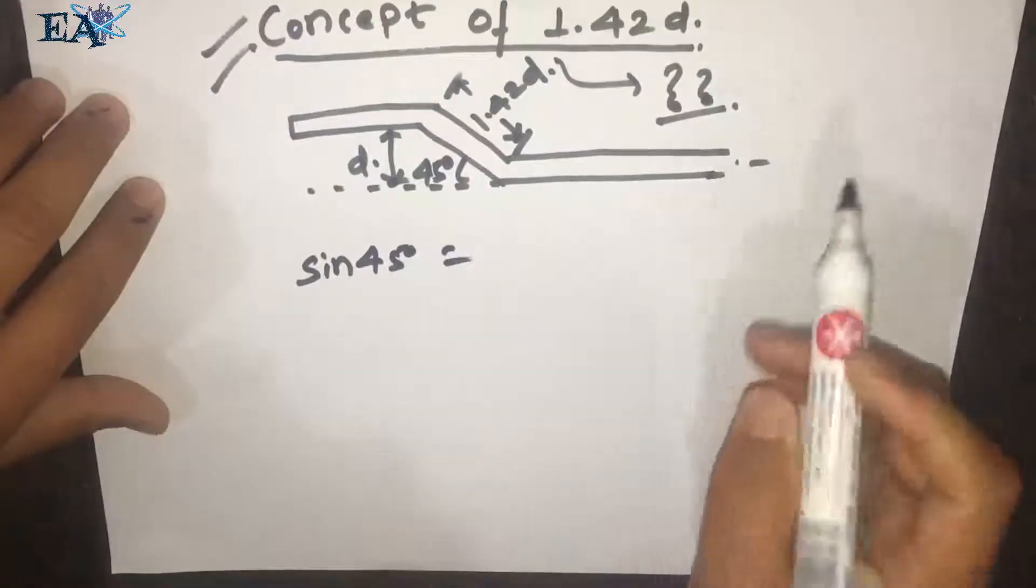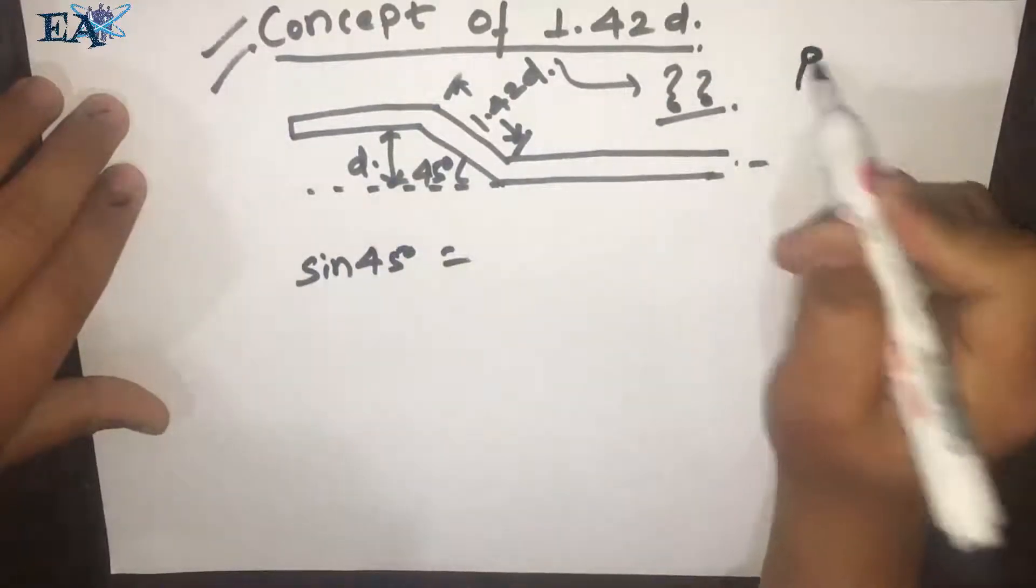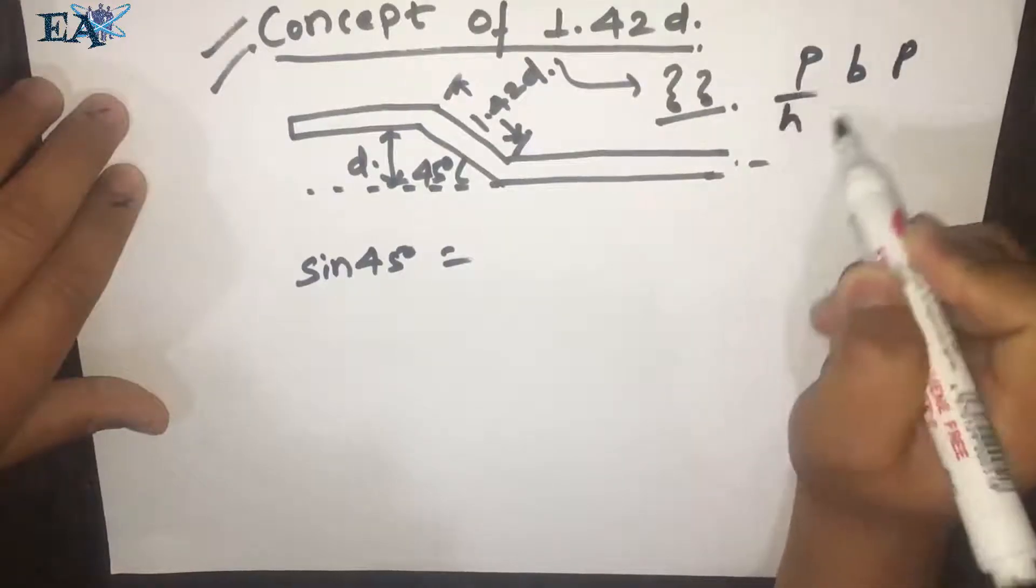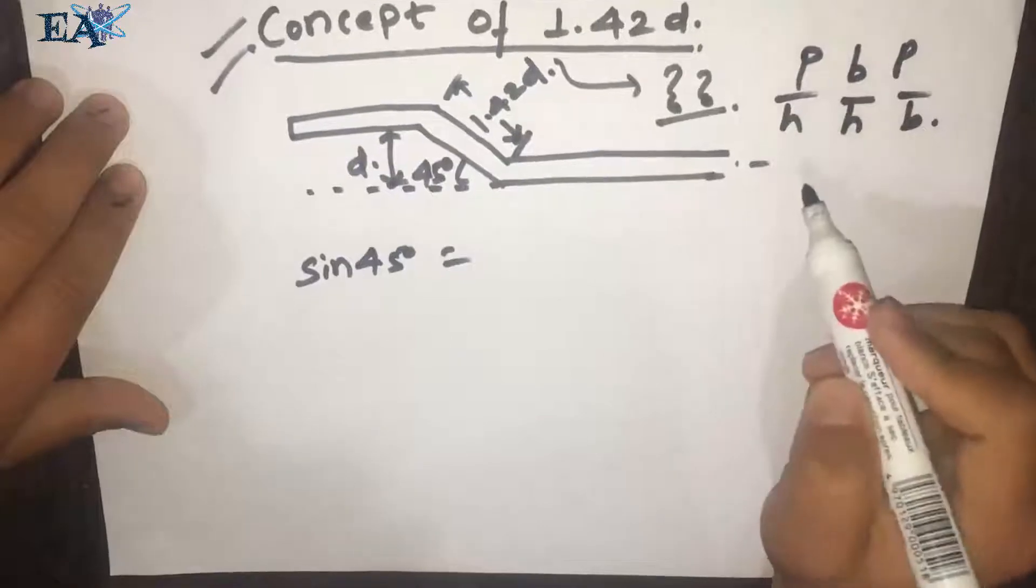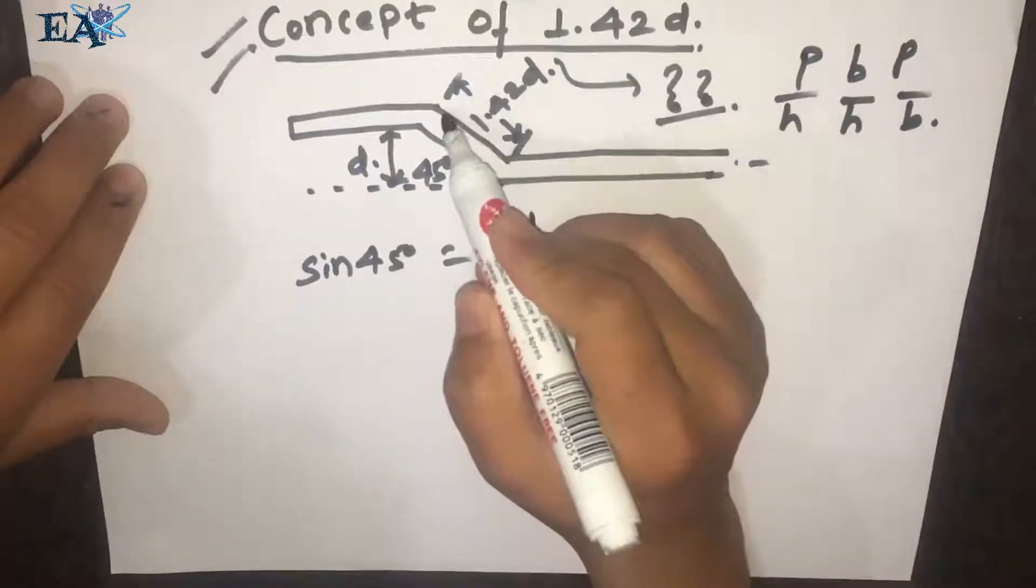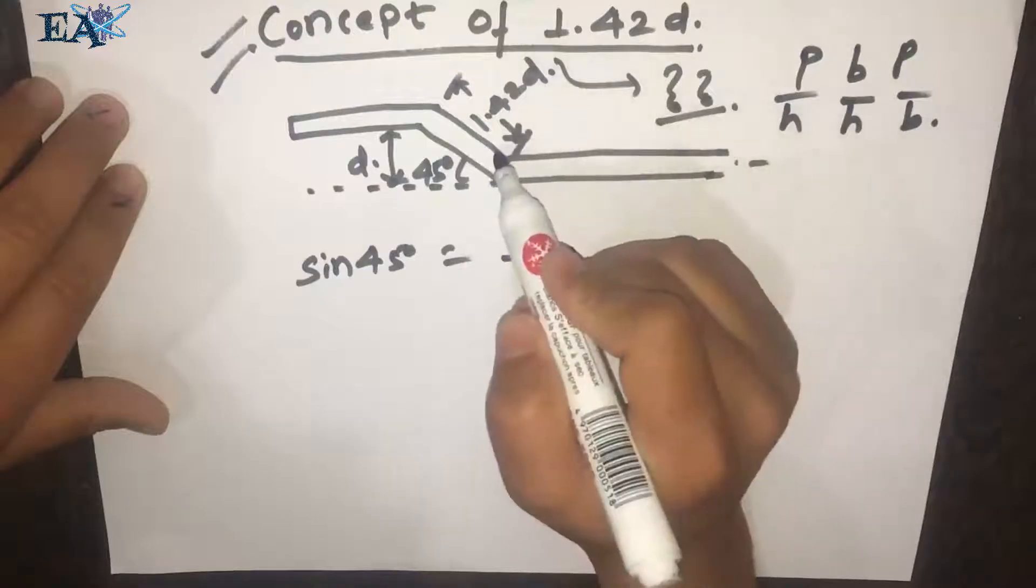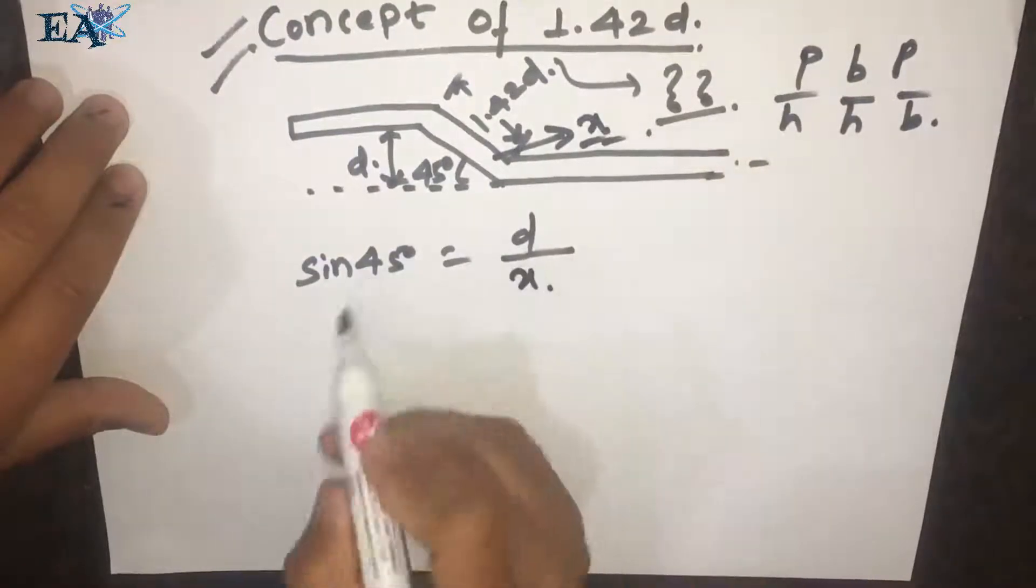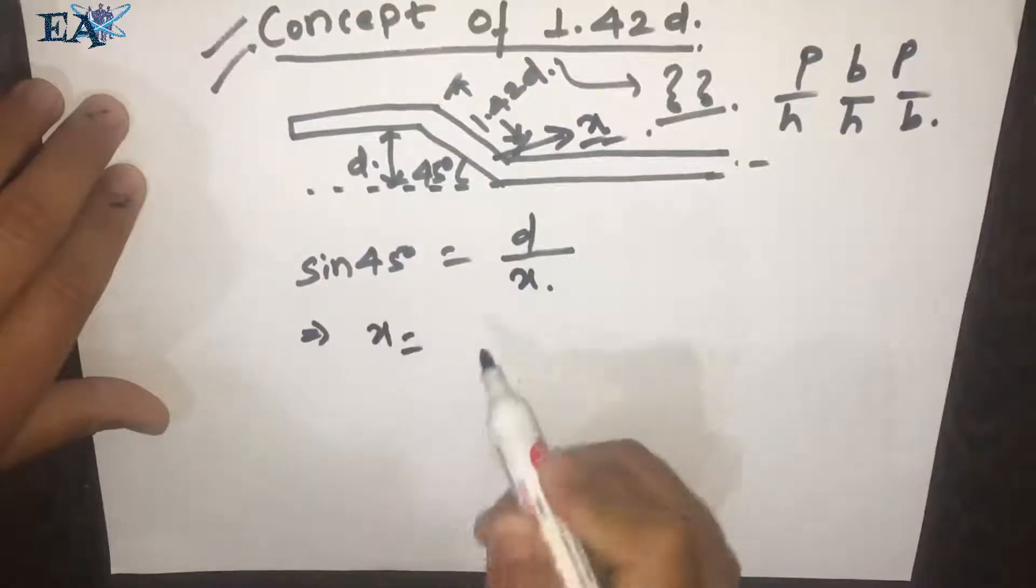It's P by H—so it's P by H, which is D by... Let's assume we don't know that it's 1.42D for now. Let's assume that this length is X over here. So it's D by sine 45 degrees.